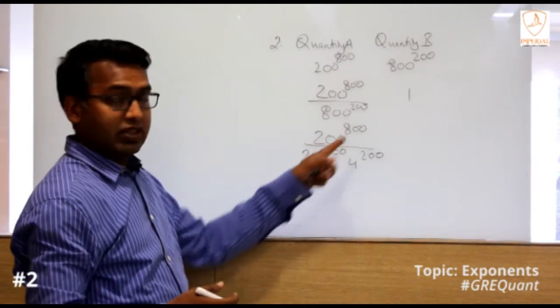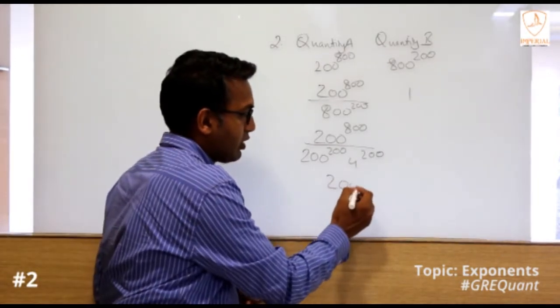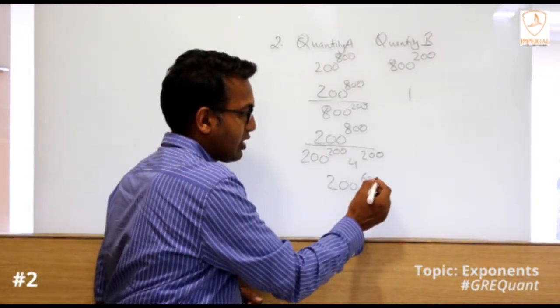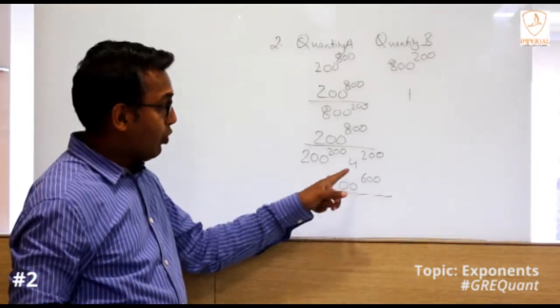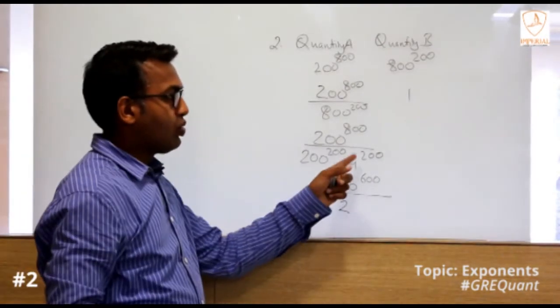You will get 200 to the power 800 minus 200, which is 600. 4 I'll write as 2 power 2, so 2 power 2 with exponent 200 will become 2 power 400.